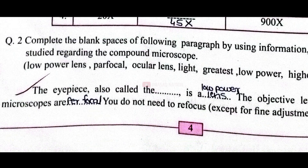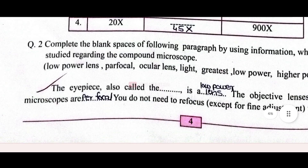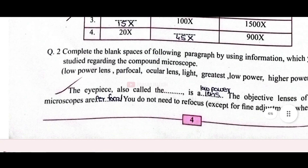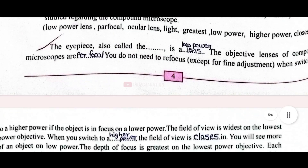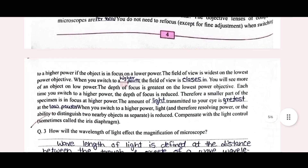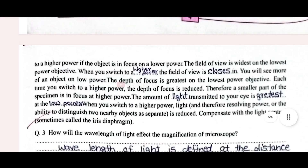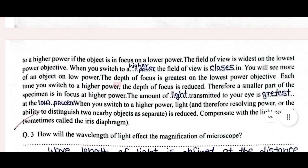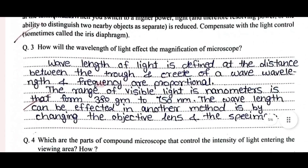Here, for the second question, the answer for low power lens is filled in, and on the next line there is 'parfocal.' On the next page we have these blank spaces: higher power, closes, light, greatest, and low power — fill in the blanks.